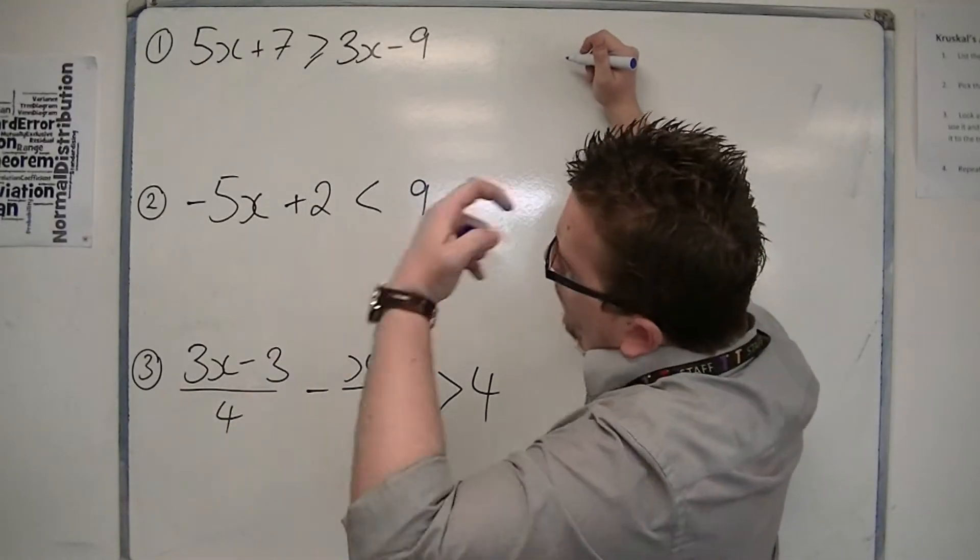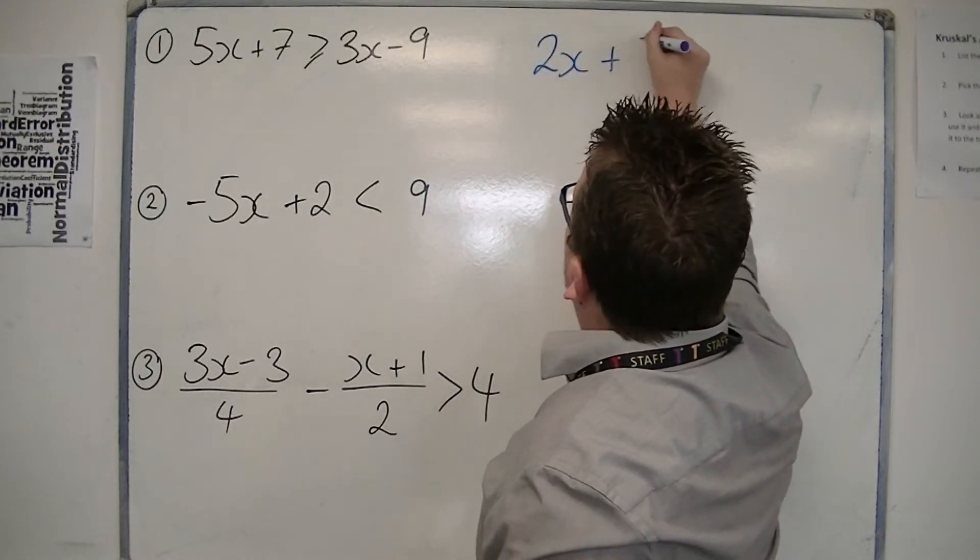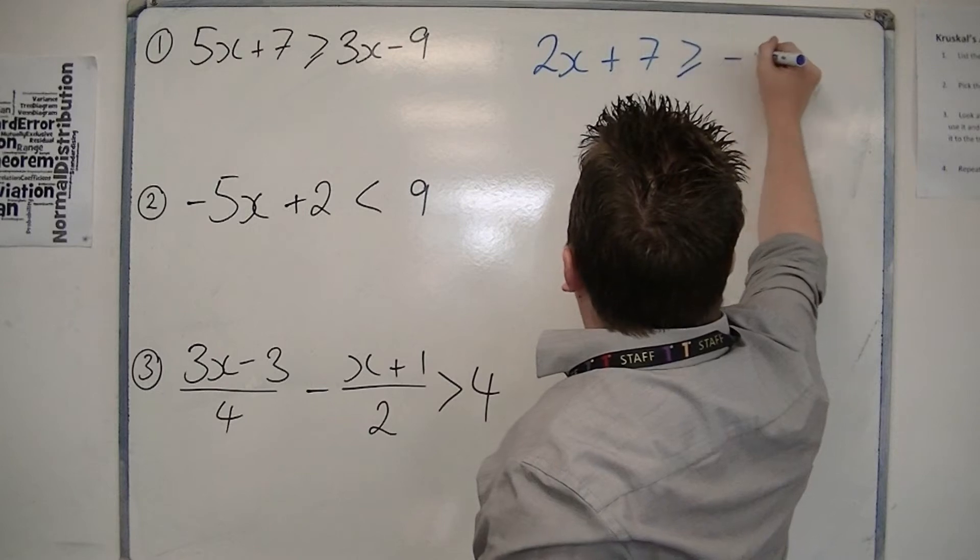So 5x plus 7 is greater than or equal to 3x minus 9. First, I'll take 3x from both sides, so we get 2x plus 7 is greater than or equal to minus 9.